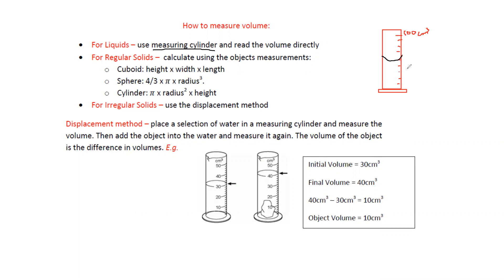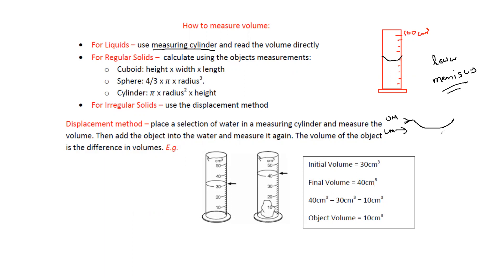When we pour liquid into the measuring cylinder, we use the meniscus — the meniscus refers to the curve of the liquid surface. For water, we always read the lower meniscus. The curve we normally see for water is the lower meniscus; the upper meniscus is the top of the curve.